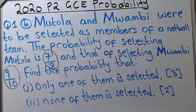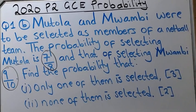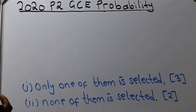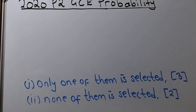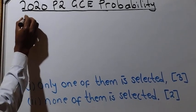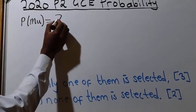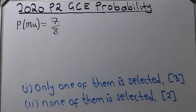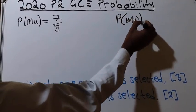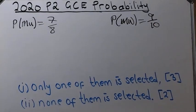What we have been given is the probability of selecting Muthola and the probability of selecting Mwambi. So I will write: probability of Muthola equals 7 over 8, and probability of Mwambi equals 9 over 10. These are the probabilities of selecting these two people.